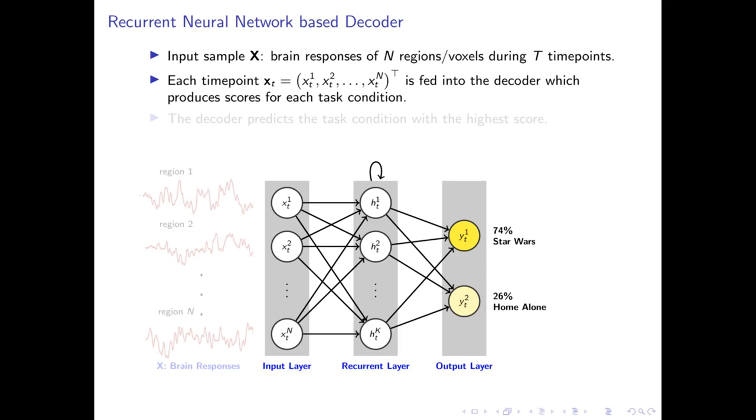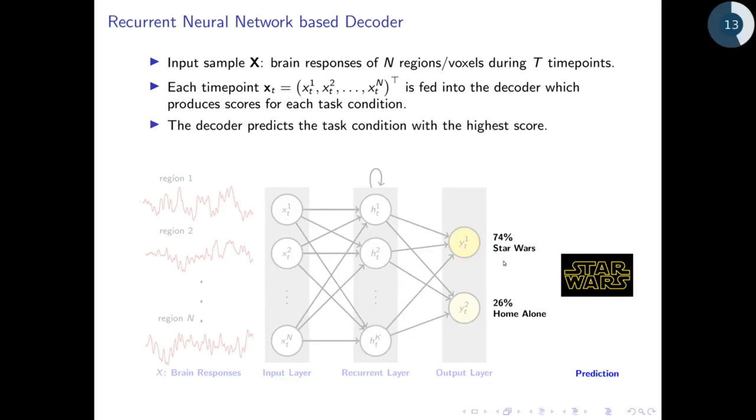Finally, the RNN predicts the task condition with the highest score. In this figure, RNN predicts Star Wars because it has the highest score among the two.